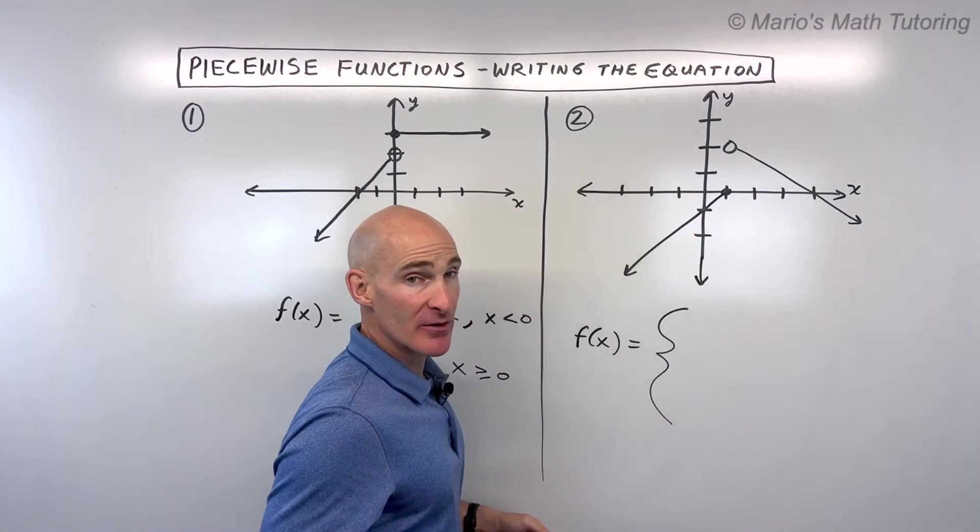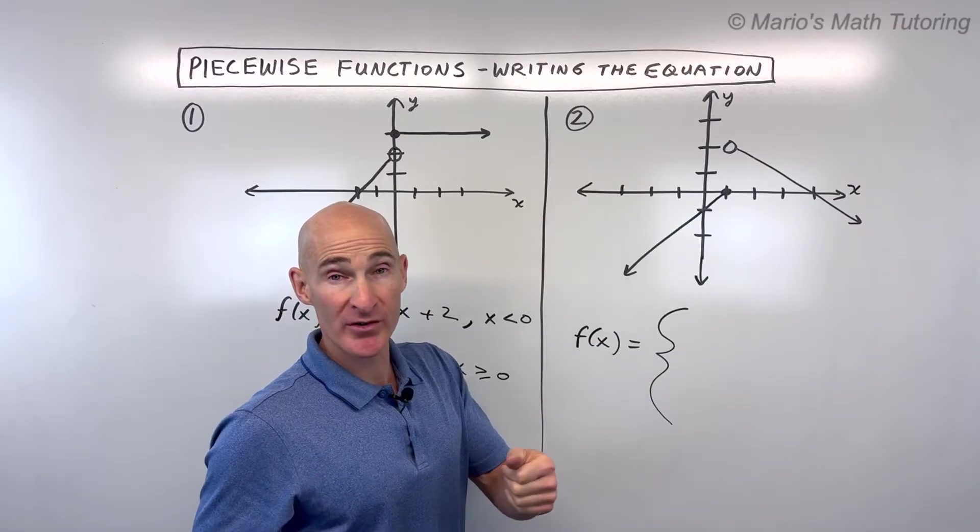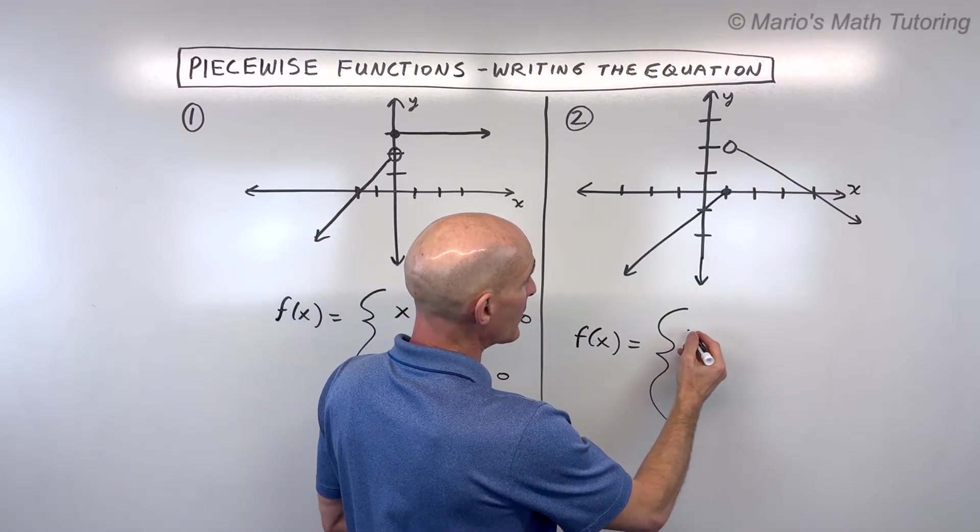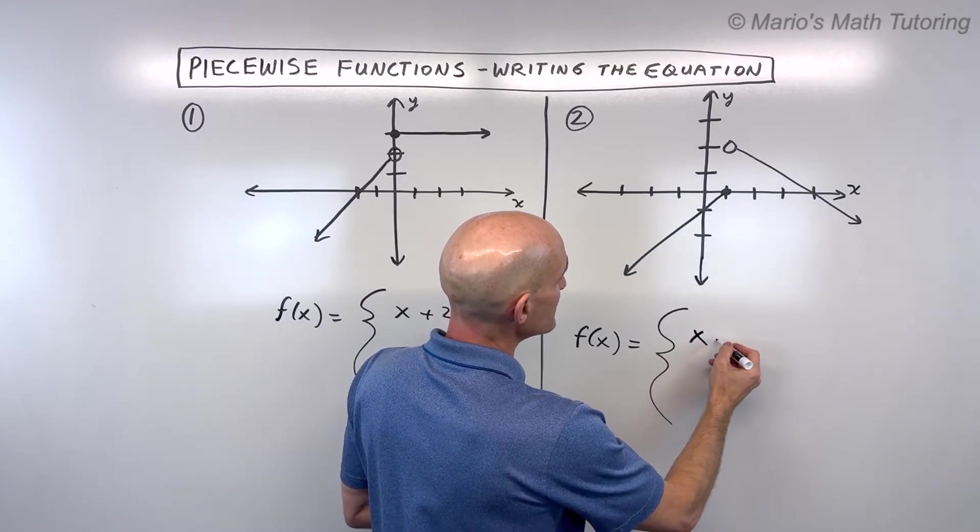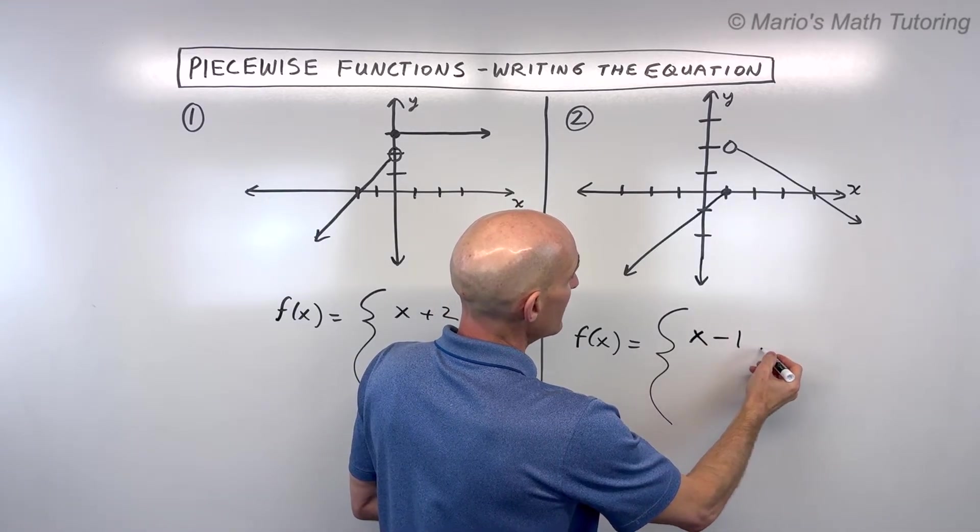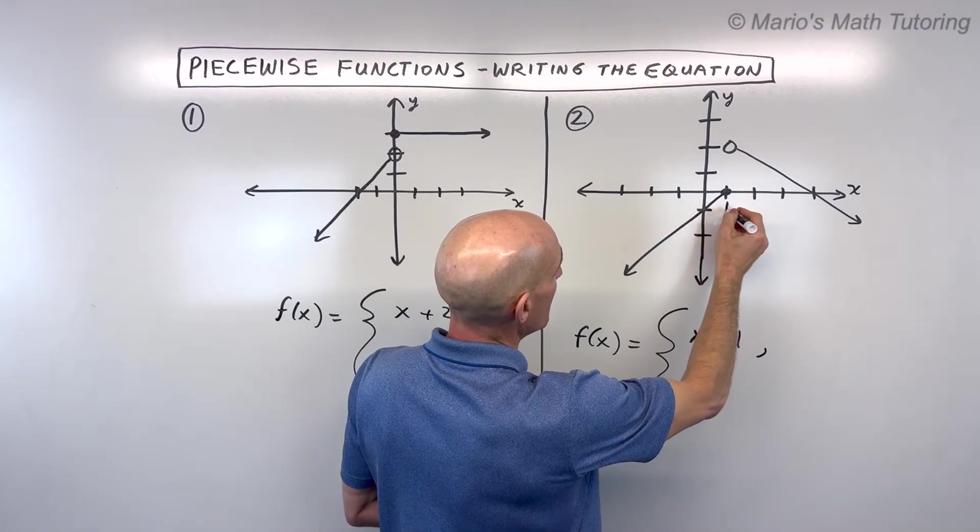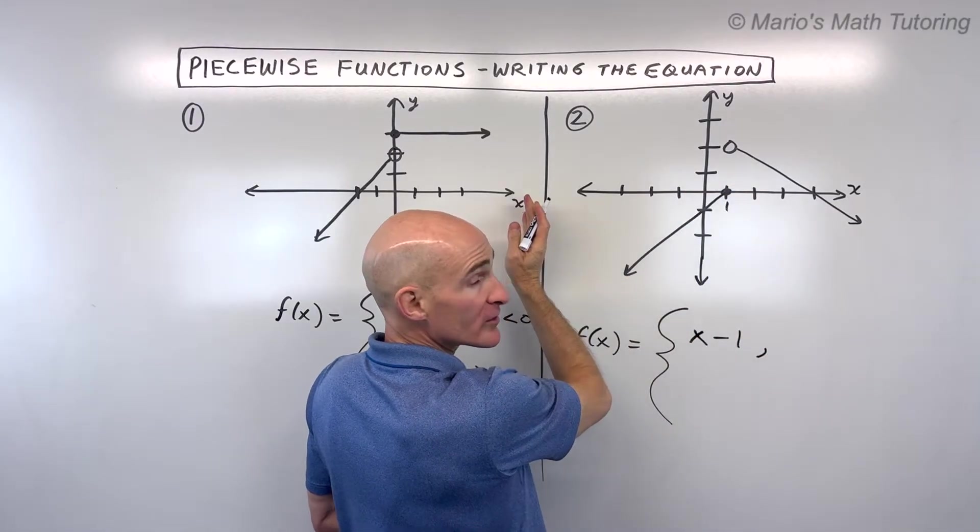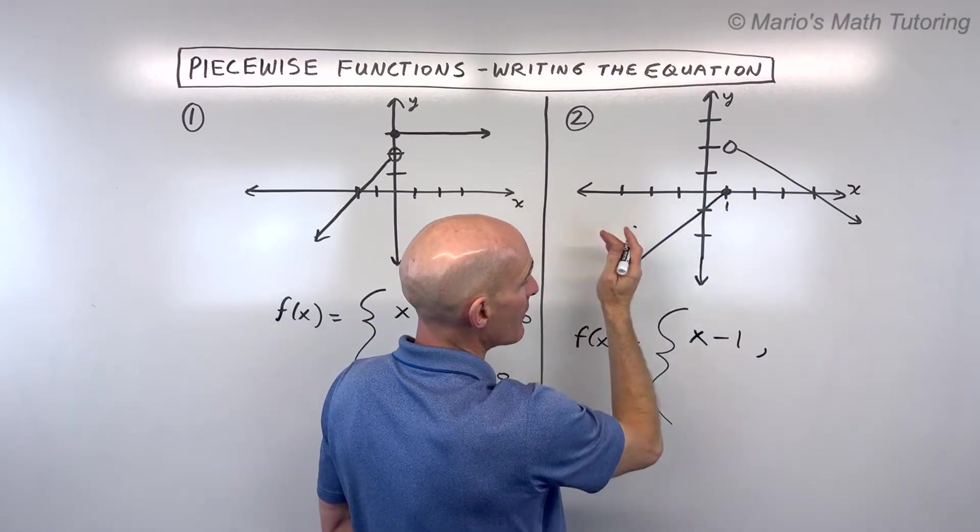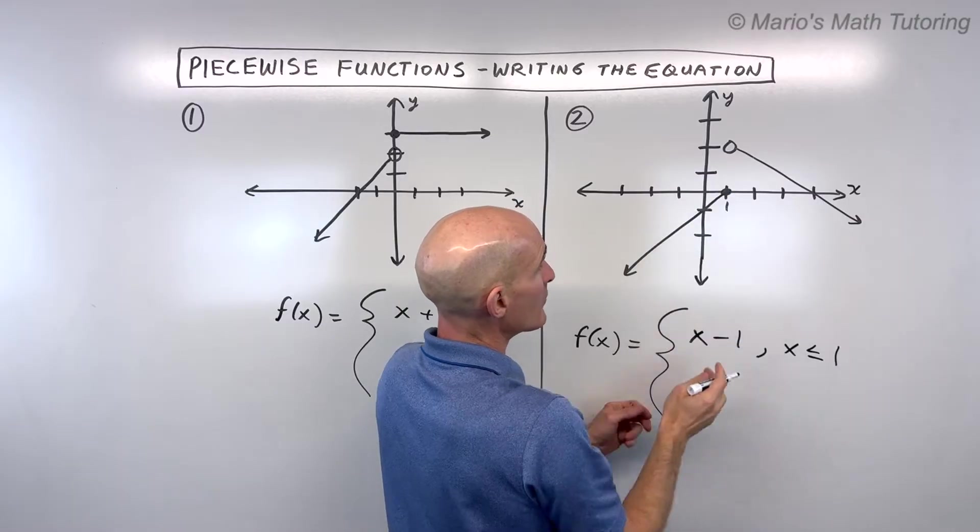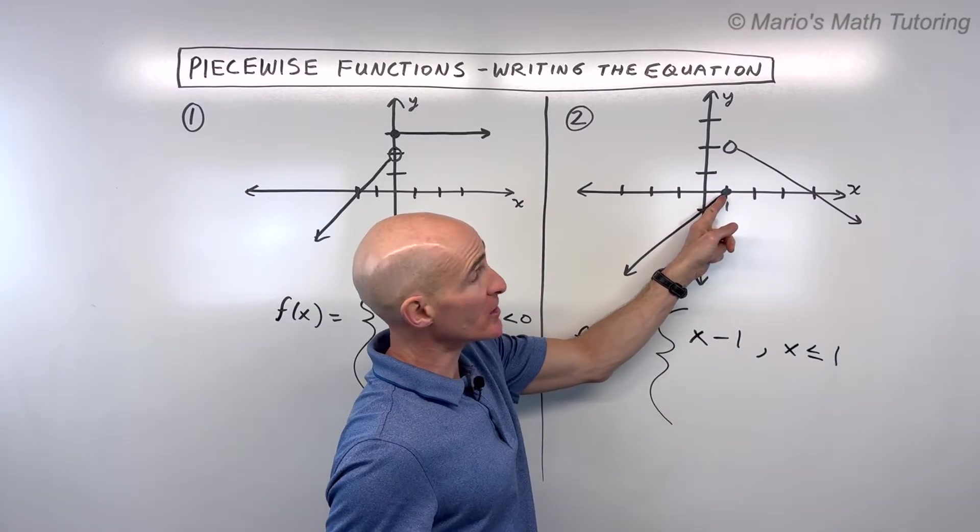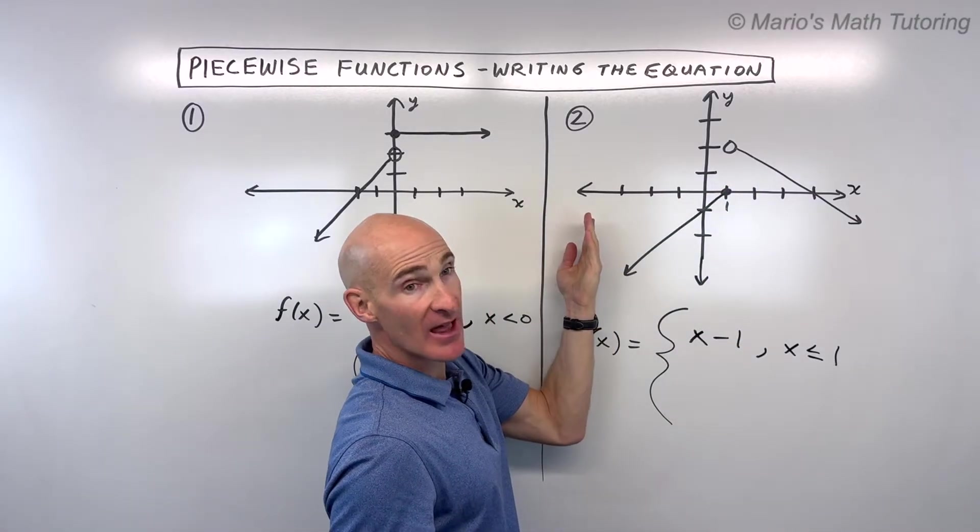So using the slope-intercept form or the y = mx + b form, I could say that this is y = x - 1. But that's when x is here at 1 or to the left. So how do we say to the left? That's less than or equal to 1. Now again, remember equal to means that it's closed or it includes that point. Less than means to the left.